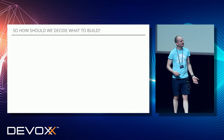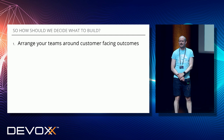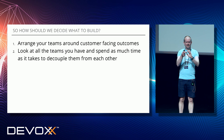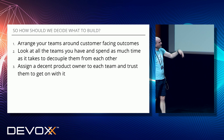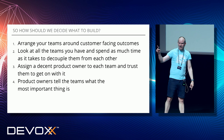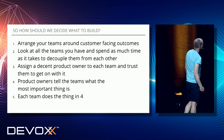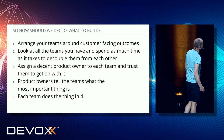So how should we decide what to build? Here's my thesis. Number one: arrange your teams around customer-facing outcomes — this is a bit like a reverse Conway maneuver. Number two: decouple the teams — don't spend a load of time deciding how to deal with coupling, just get rid of coupling. Number three: get a decent product owner. Number four: all that product owner needs to do to tell me as a technical leader is, this is the most important thing to do now. And then we'll do it. And then go back to four — job done. Thank you for listening.